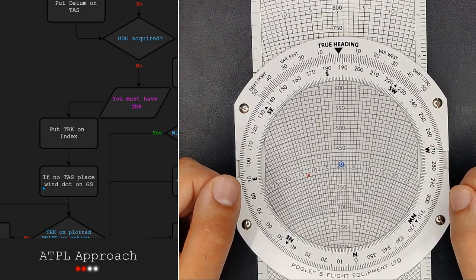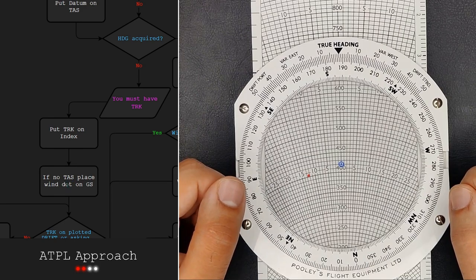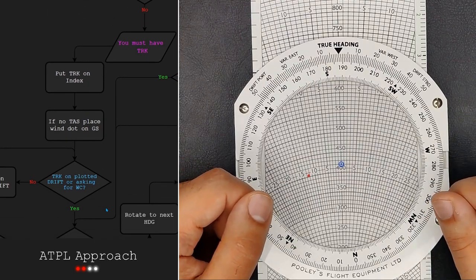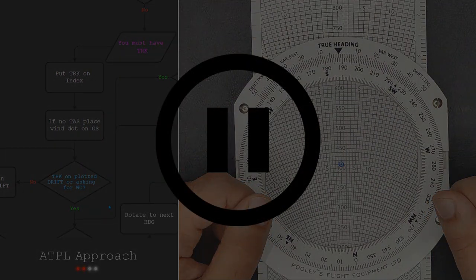The next statement says, if we don't have the TAS, we have to put the wind dot on our ground speed. We have the TAS, so can ignore it. One second, let's pause the video right here.